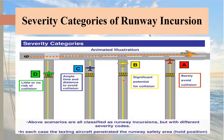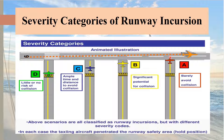In category B, the aircraft on the taxiway has crossed the runway holding position and moved near to the active runway, and there is an arriving aircraft. There is significant potential for collision between the two aircraft, qualifying this for severity category B. In category A, the aircraft has moved very near to the runway and the arriving aircraft must take major corrective action to avoid a collision. Due to the corrective action, the two aircraft have barely avoided a collision, making this category A severity.